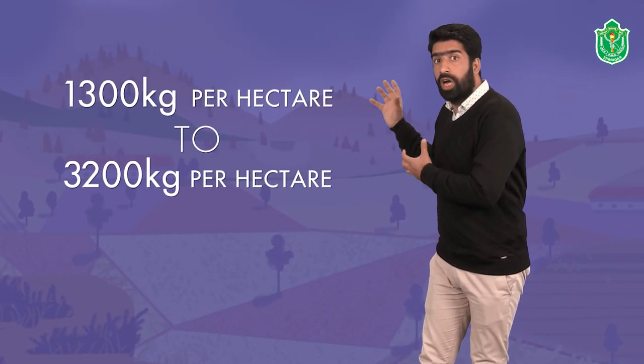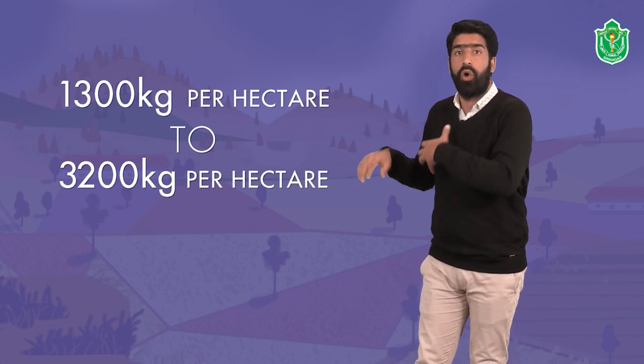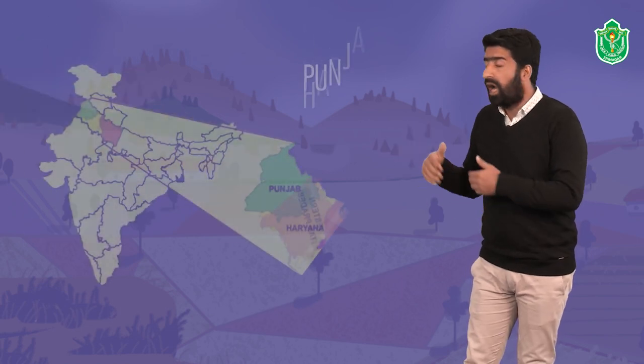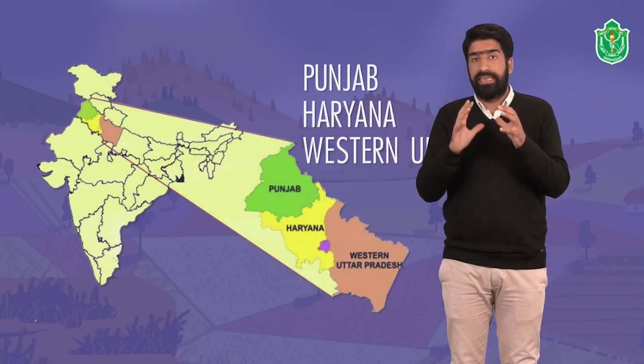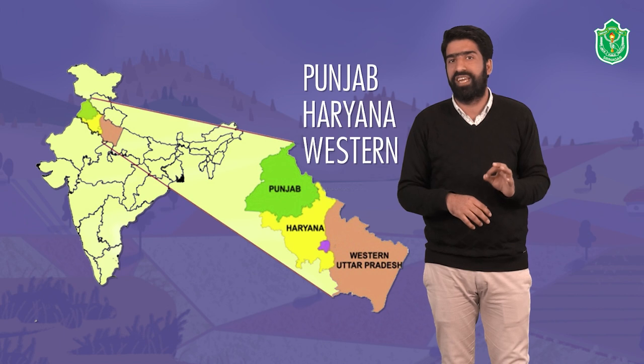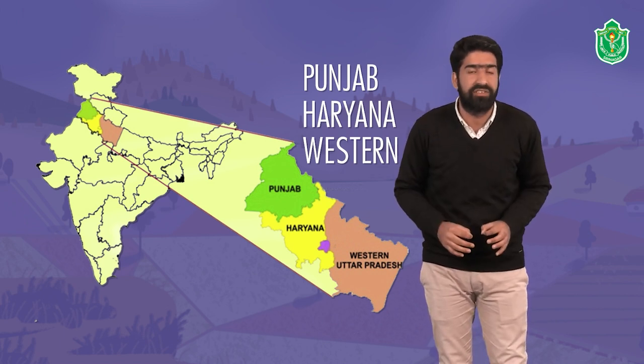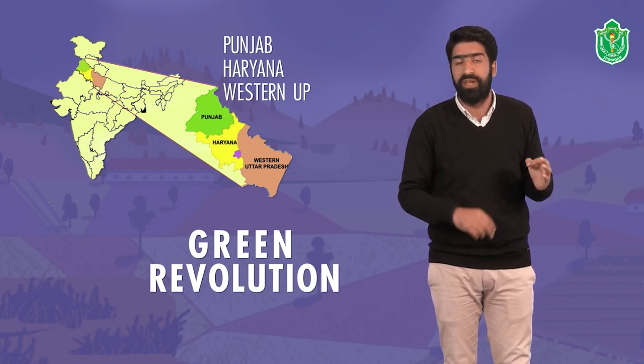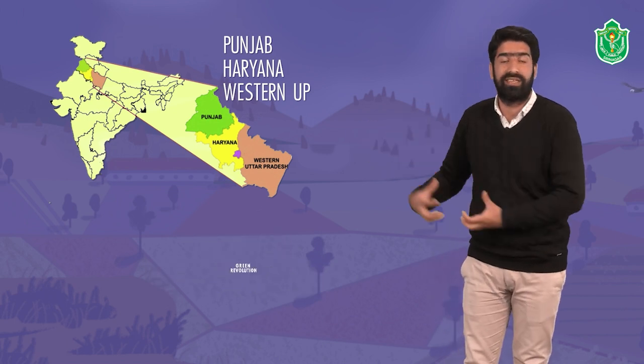In Palampur, after the use of high yielding variety seeds, the production of wheat increased from 1,300 kg per hectare to 3,200 kg per hectare — more than double. This was only possible because of HYV seeds. These seeds were first introduced in the states of Punjab, Haryana, and Western UP, and this brought a revolution in production especially in rice and wheat, which was then termed the Green Revolution. The Green Revolution refers to the use of HYV seeds mainly for two crops — rice and wheat — first introduced in Punjab, Haryana, and Western UP.